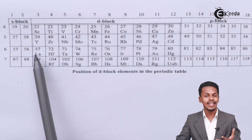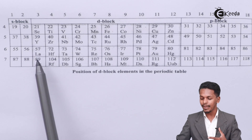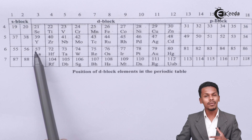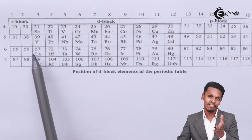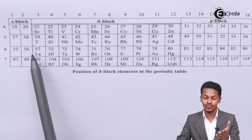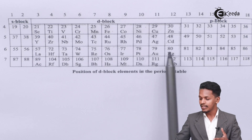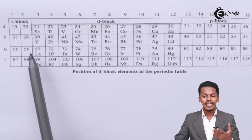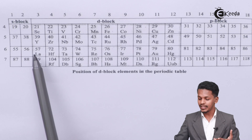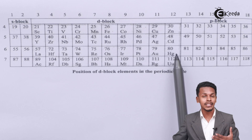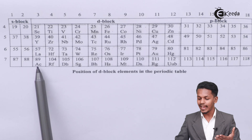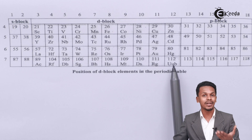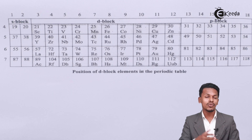For the 5d series, it starts with lanthanum (atomic number 57), though lanthanum and actinium are f-block elements — we'll cover f-block elements in a future lecture. The 5d series ends with mercury (Hg). For the 6d series, it starts with actinium and ends with copernicium (Uub).